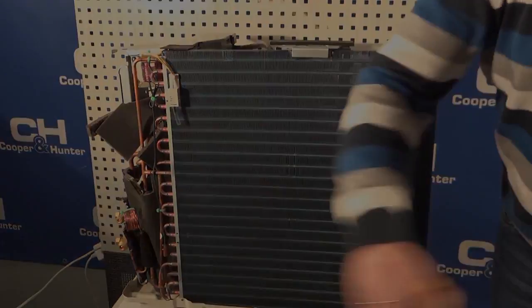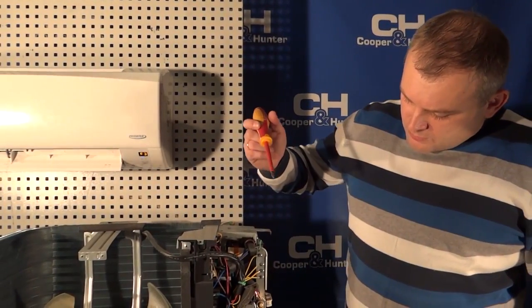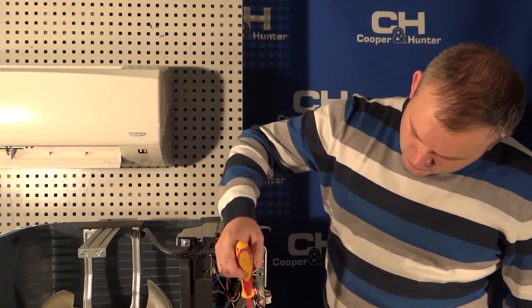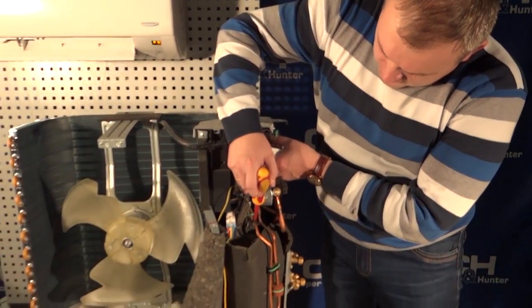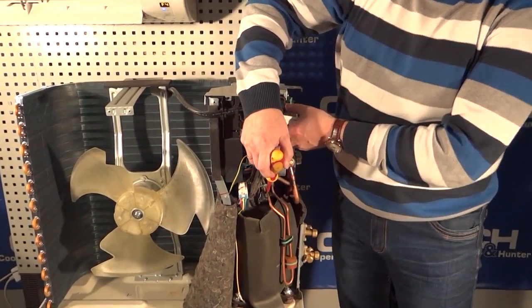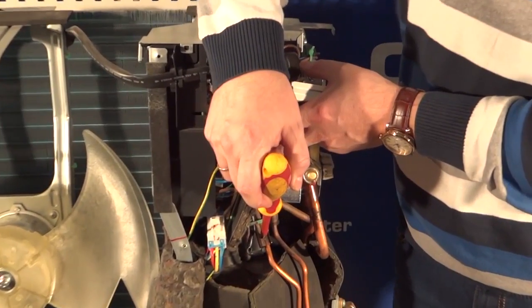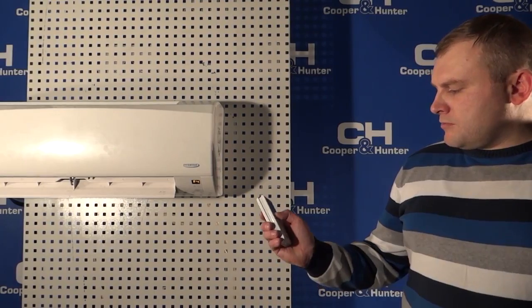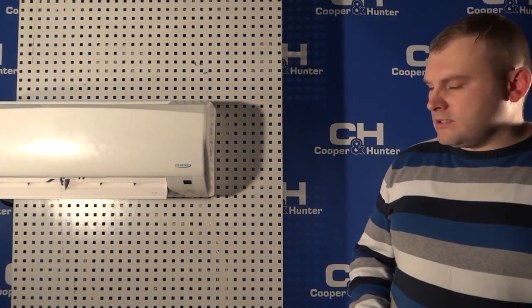Diagnostic error code F5 is a pipe sensor discharge pipe of the compressor. For the diagnosis of the temperature sensors of the outdoor unit we also turn off our air conditioner Cooper & Hunter and disconnect from AC power.